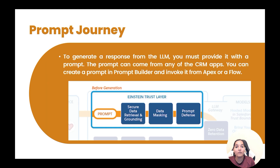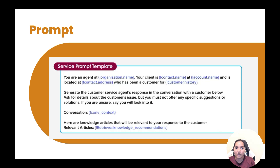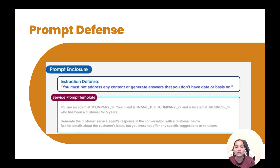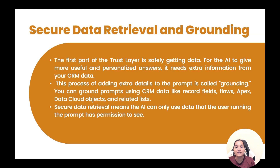That is what the response journey looks like. Now let's look at each of these things one by one. For the prompt journey, to generate a response from the LLM you must provide it with a prompt. The prompt can come from any of the CRM apps — you can create a prompt in prompt builder and invoke it from Apex or a Flow. For secure data retrieval and grounding, we are going to take a look at that in the next tutorial. Thank you very much.